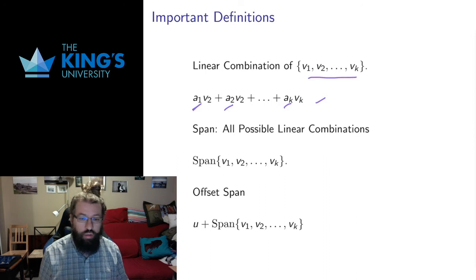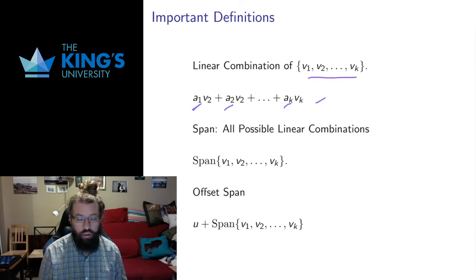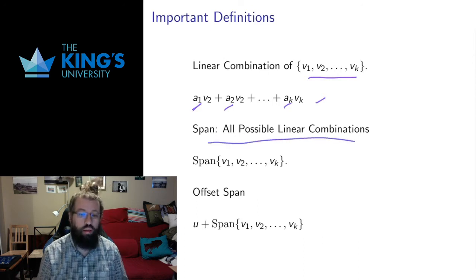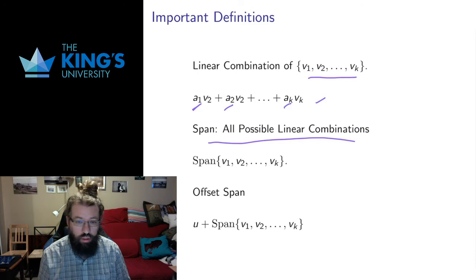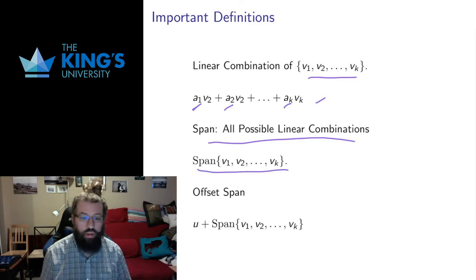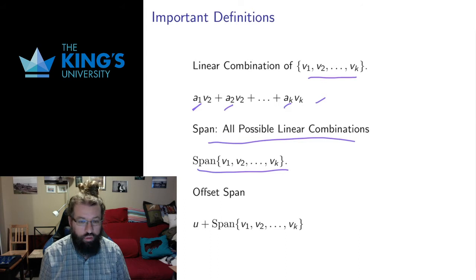The definition of span of a set of vectors is all possible linear combinations. So one linear combination is a choice of particular constants applied to the vectors. A span is the subset of Rn that you get by taking all possible linear combinations together, and it has this notation — span with the set of vectors in front of it. It's going to be a pretty important object, and we'll talk more about its properties in a future video.